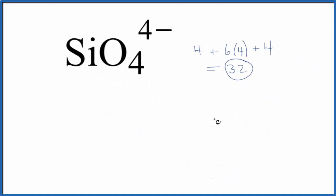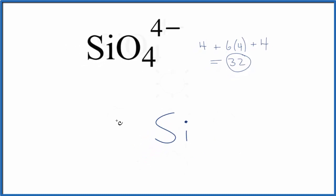So we put the least electronegative element in the center. That's the Si. And then we have four oxygen atoms. We're going to place them around this Si atom.